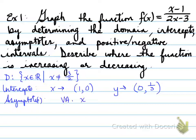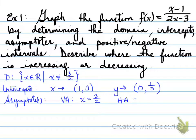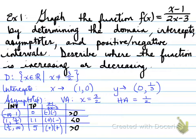For the asymptotes: there is a vertical asymptote at x = 3/2, because the restriction doesn't get canceled. There is also a horizontal asymptote because the numerator and denominator have the same degree. Dividing the leading coefficients gives a horizontal asymptote at y = 1/2.